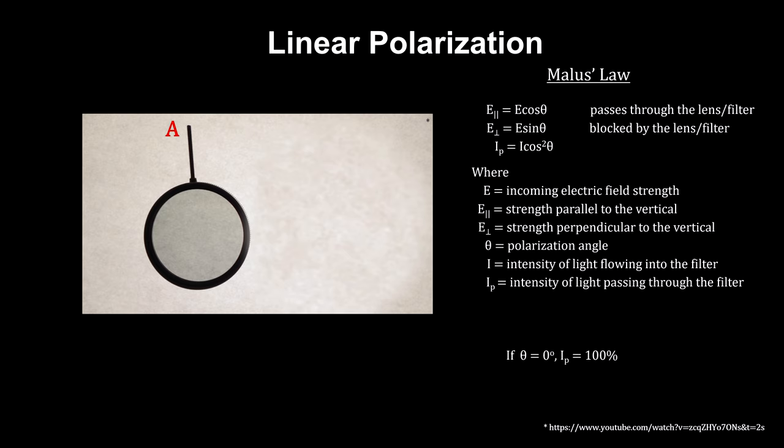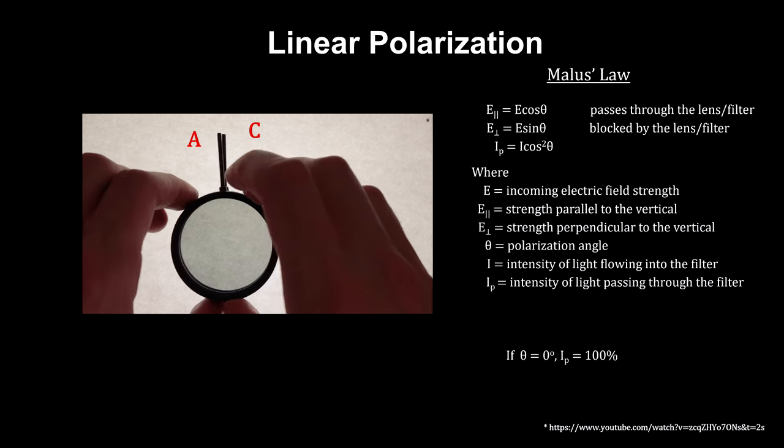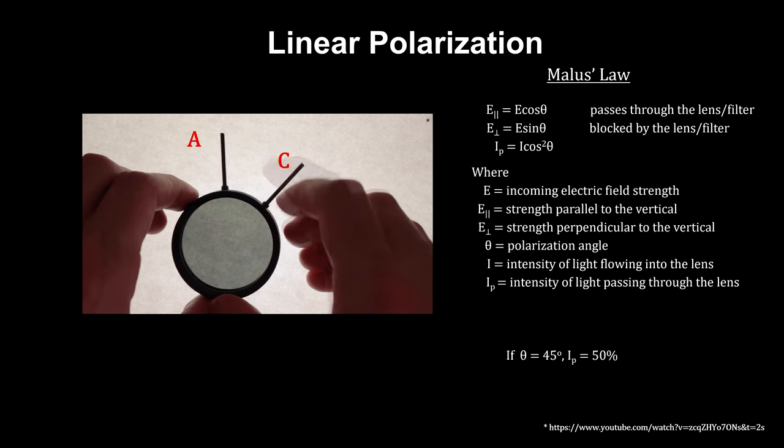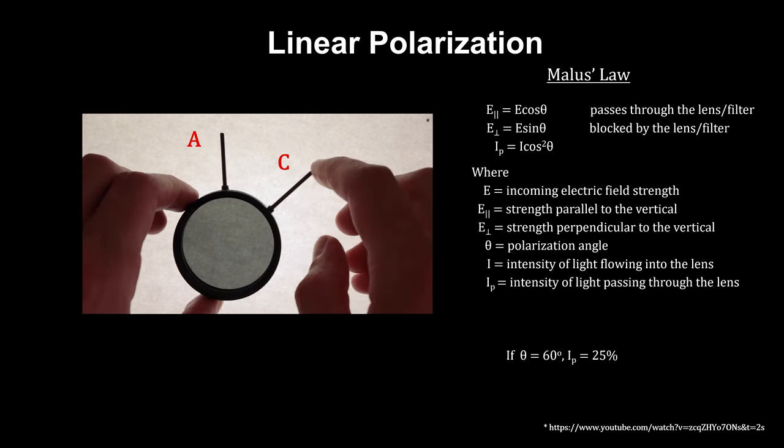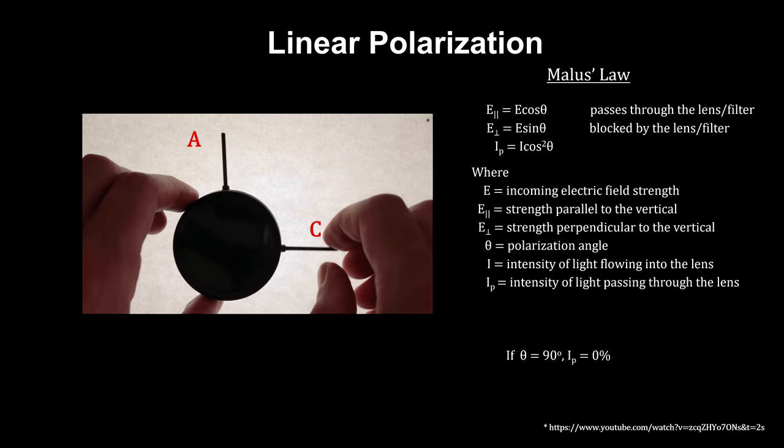If we bring a second lens, lens C, and orient it the same as the first, all the light that passes through A passes through C. But as we rotate lens C, we see that the amount of light passing through is going down. By the time we reach 90 degrees, C is blocking all the light that passes through A.